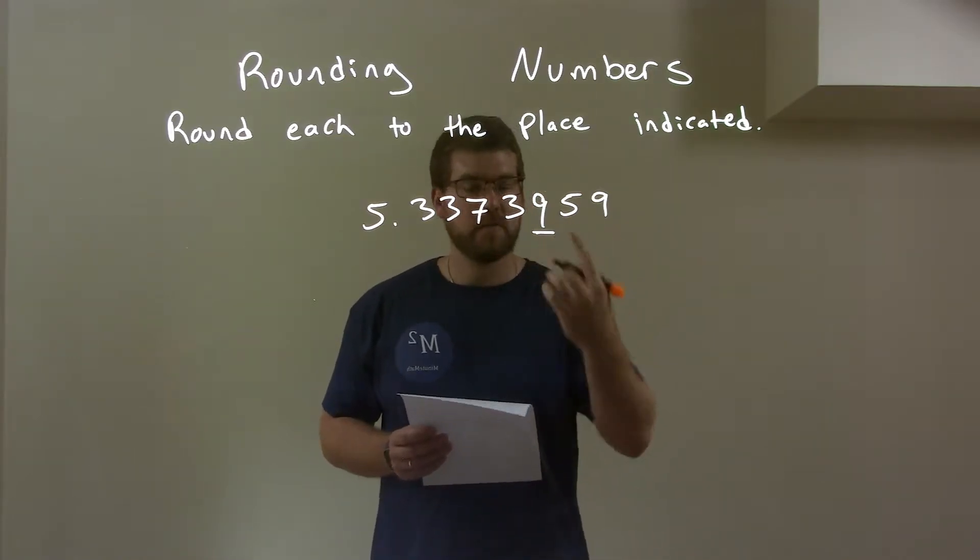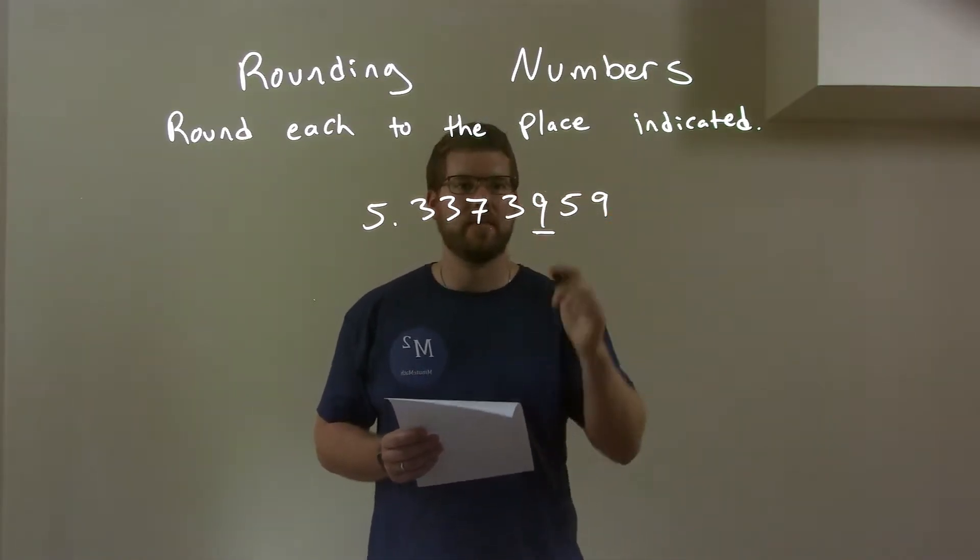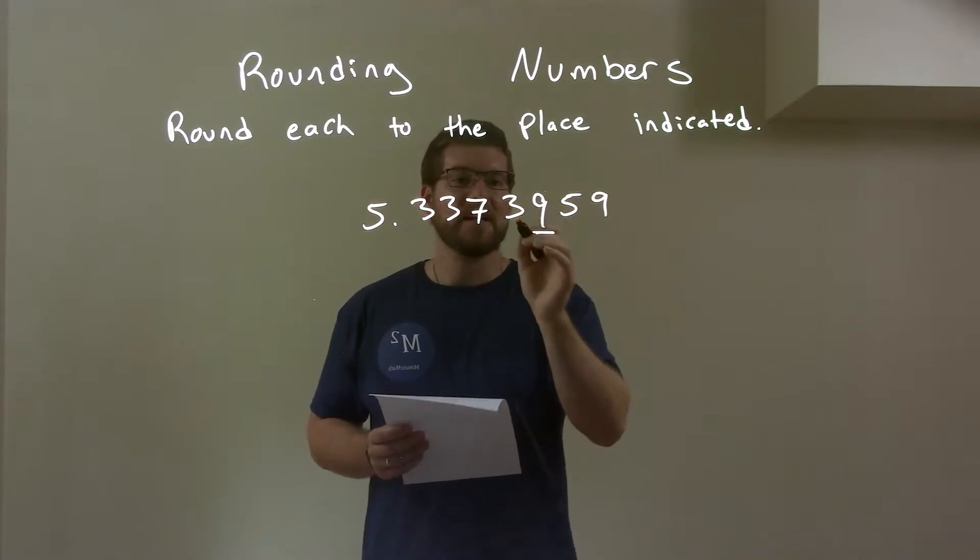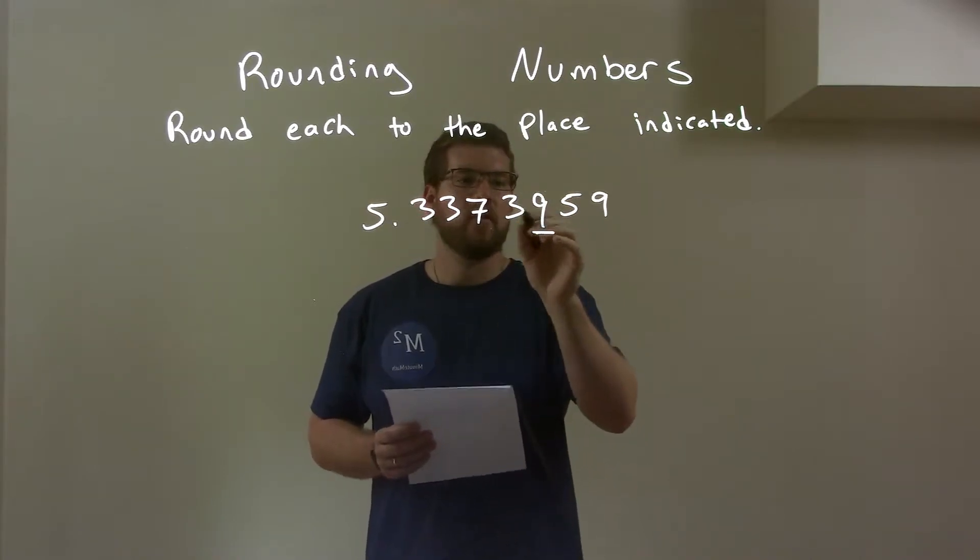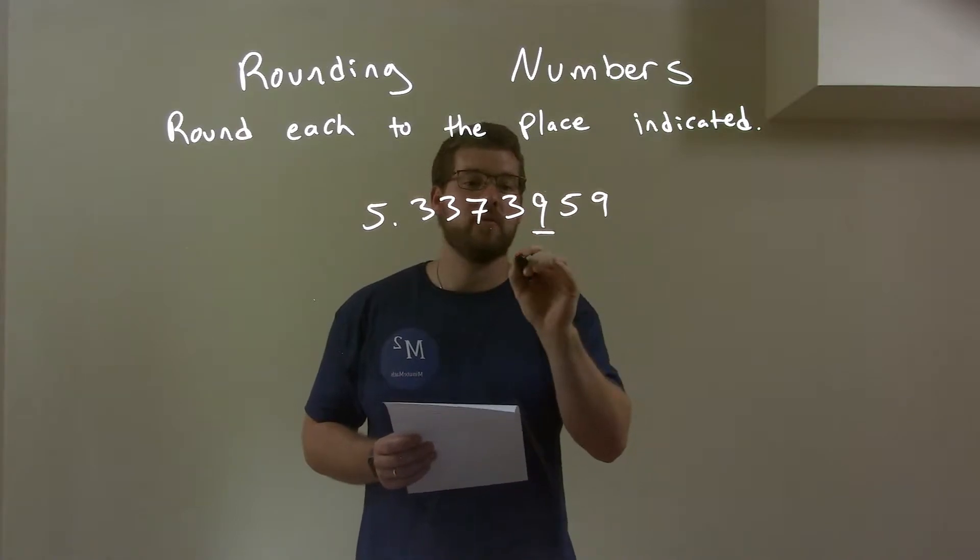The 5 causes the 9 to round up to a 10. So a little 10 there, which actually changes that 3. So 39, the sense right here, that little 39 rounds up to 40.